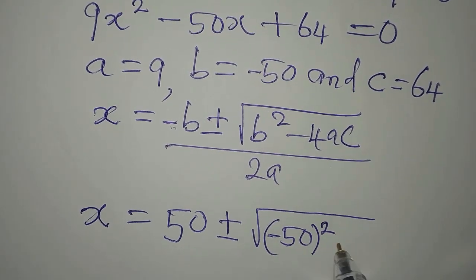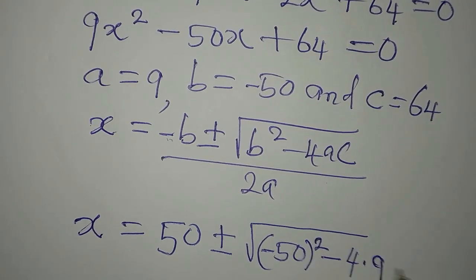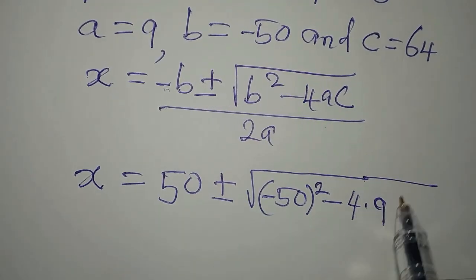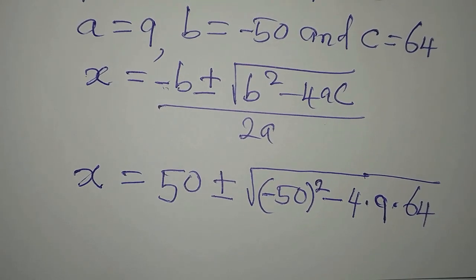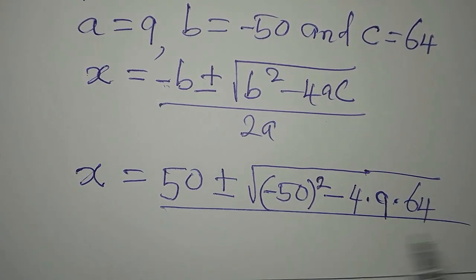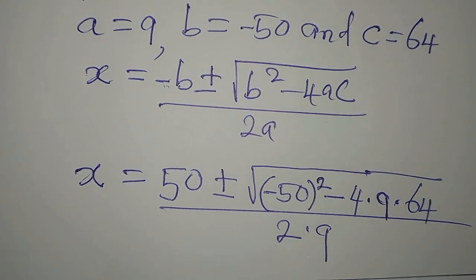b squared will be negative 50 in brackets squared, then minus 4 times 9, because a is 9, then times 64 for the c. The whole of this will be divided by 2 times 9, because a is 9.